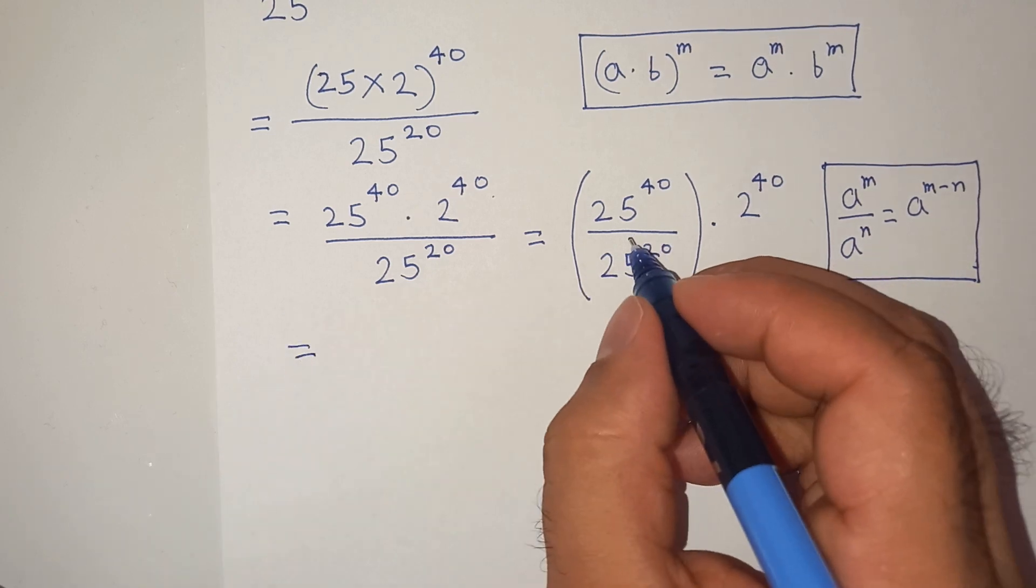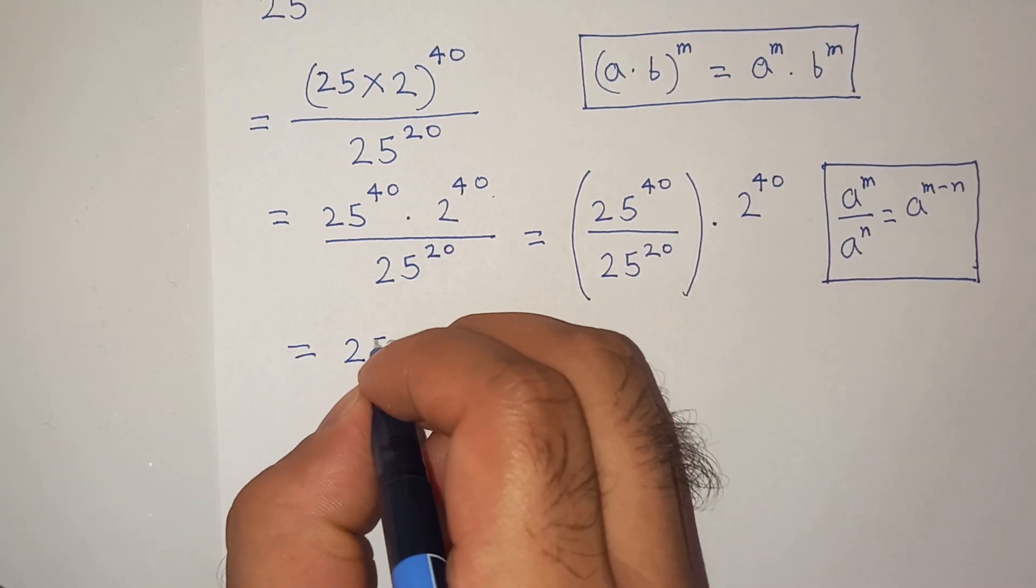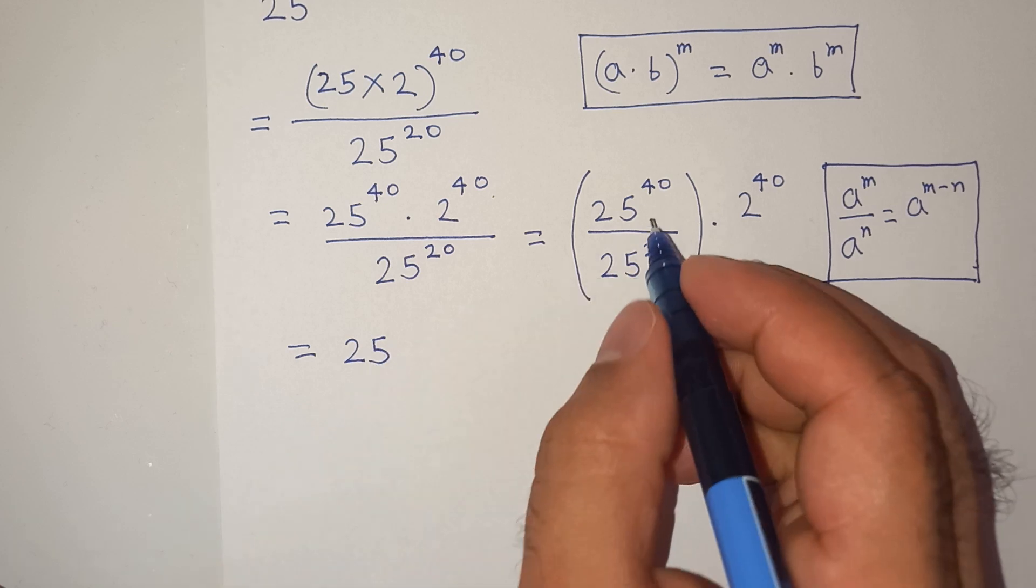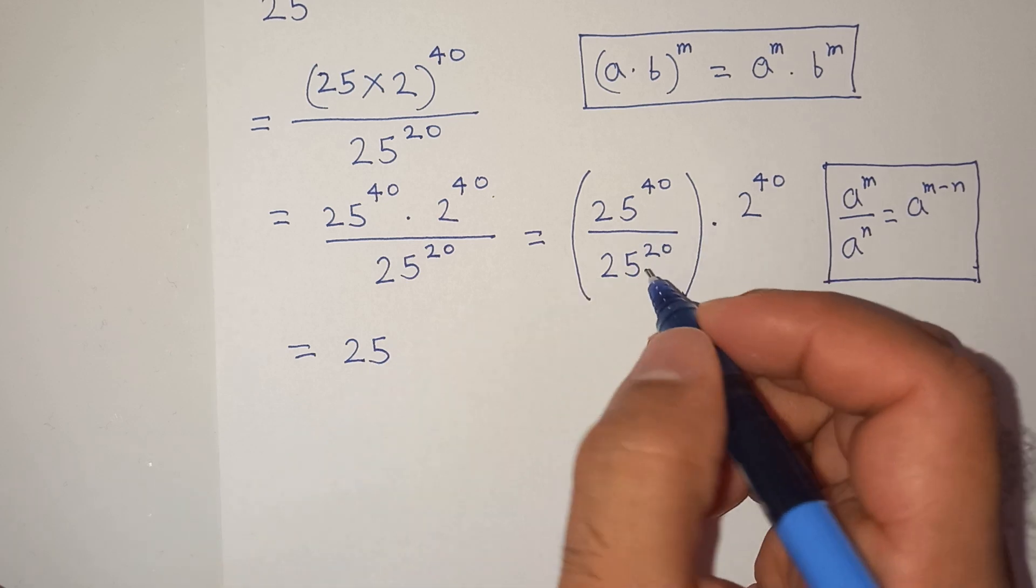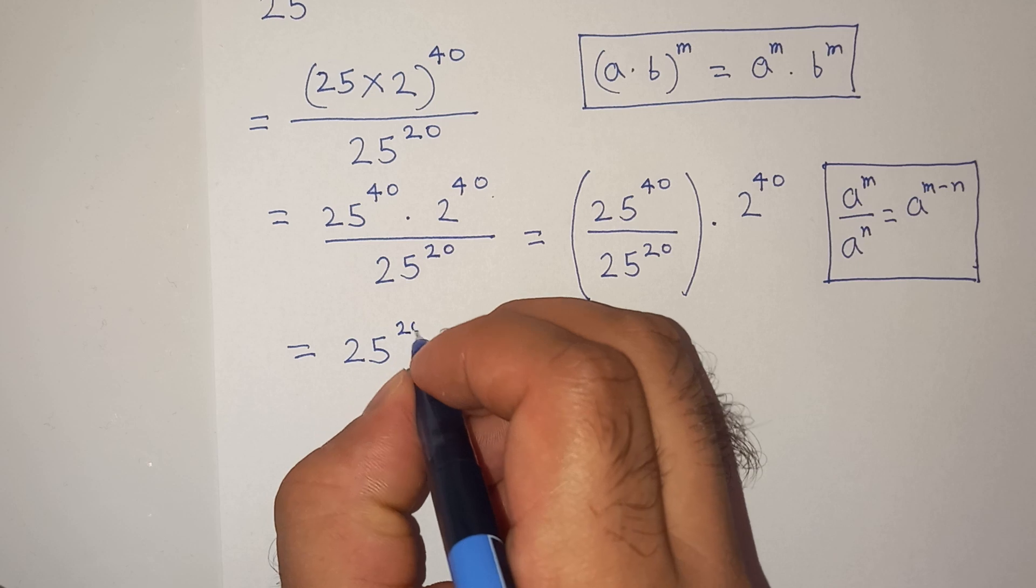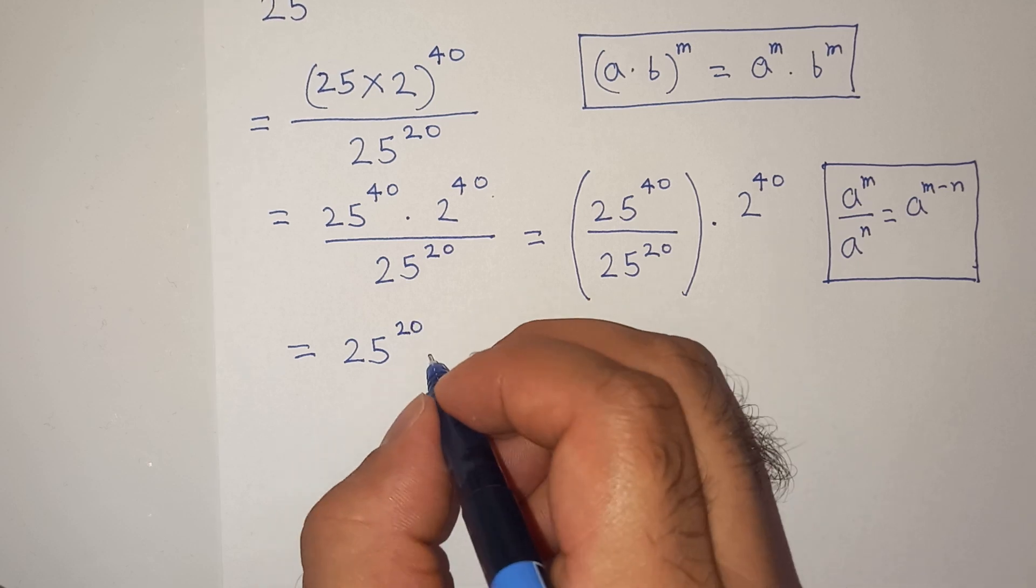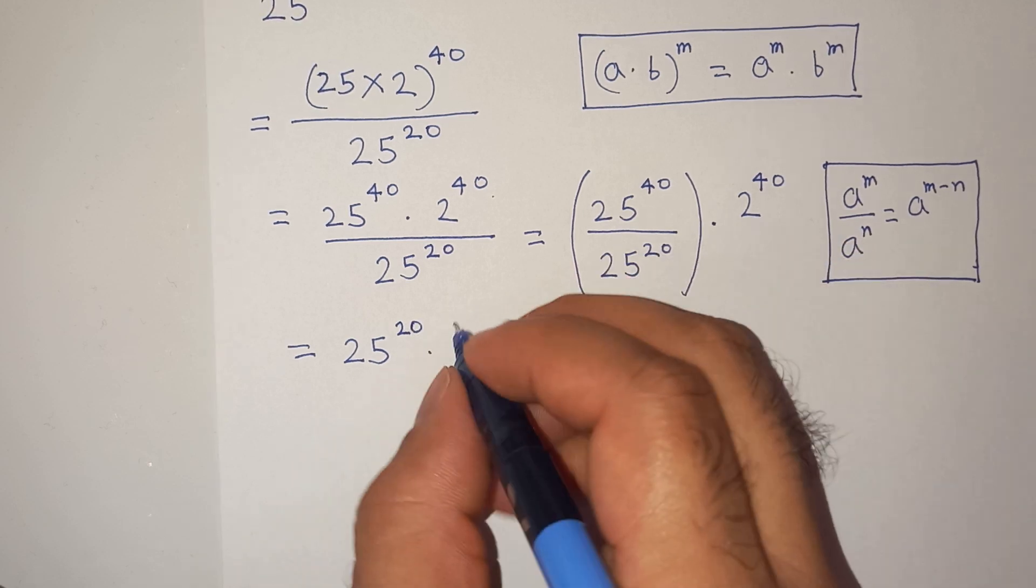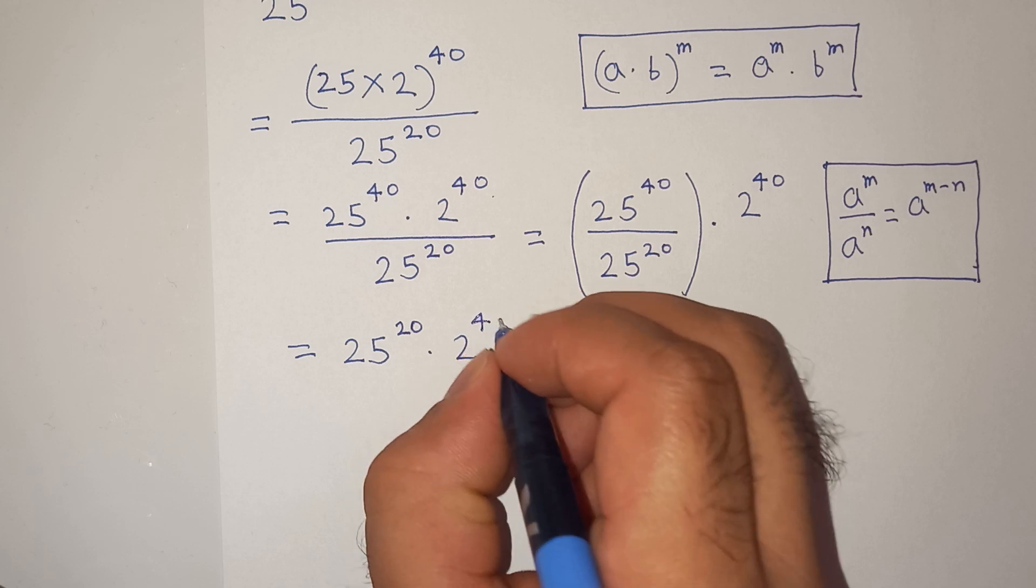So this will be 25 because this is the common base. 40 minus 20 which is 20 multiplied by 2 power 40. Right?